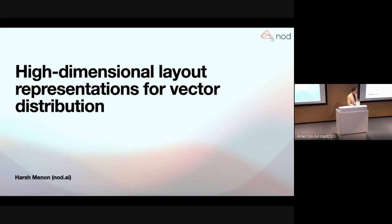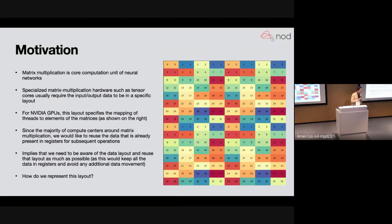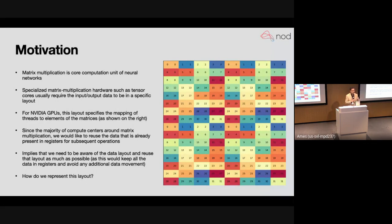I'm Harsh Menon, CTO of Nod AI. I'll be talking about high-dimensional layout representations for vector distribution, with an application to flash attention. Matrix multiplication is the core unit of computation for neural networks, so all ML AI hardware has specialized units for it — such as tensor cores on NVIDIA GPUs. But each of these specialized accelerators has very specific requirements on data layout. Here I'm showing a 16×16 matrix annotated with thread ownership for the mma.sync operation on NVIDIA GPUs.